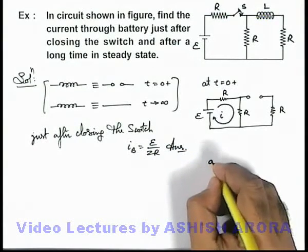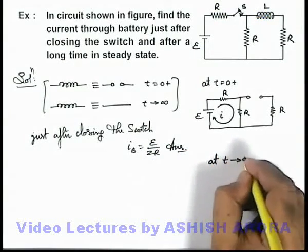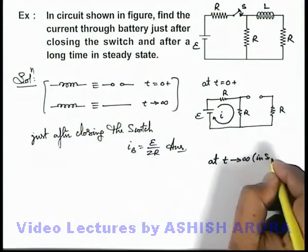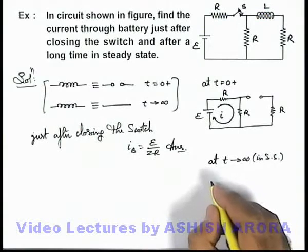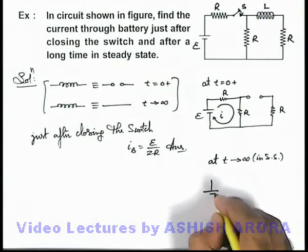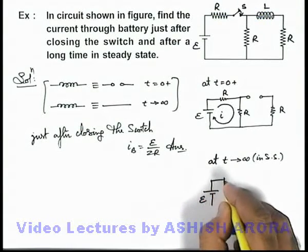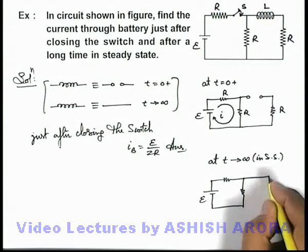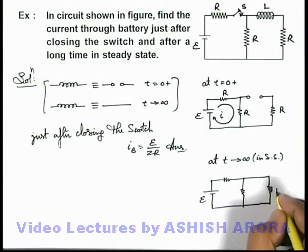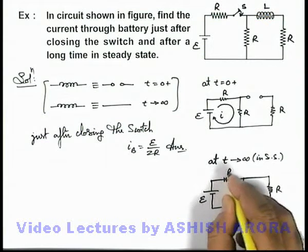And if we calculate in steady state at t tending to infinity, inductor behaves like a straight wire as no variation of current takes place. So in this situation the circuit will be drawn in this manner, inductor is replaced by a straight wire in steady state and the circuit looks like this.